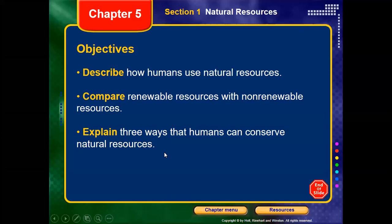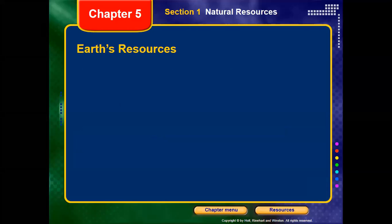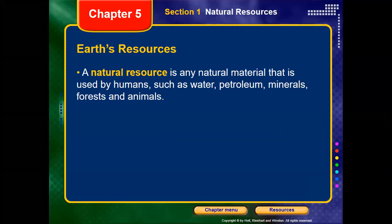During this lesson we should know how humans use natural resources, and compare renewable resources with non-renewable resources, and finally we should be able to explain three ways that humans can conserve natural resources. So let's find what are Earth's resources. A natural resource is any natural material that is used by humans, such as water, petroleum, minerals, forests, and animals — all these are considered natural resources.